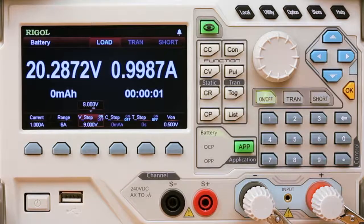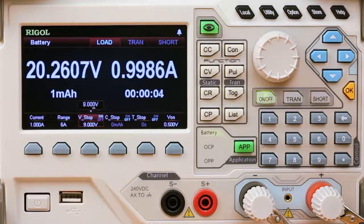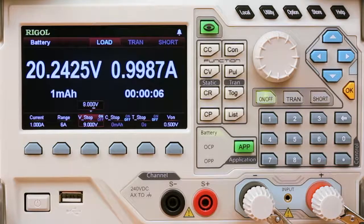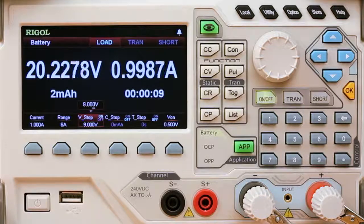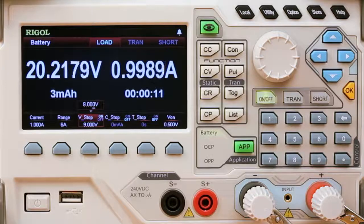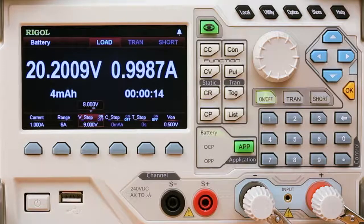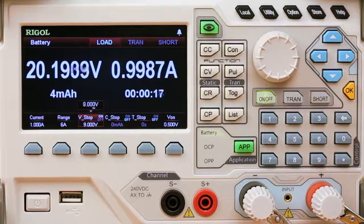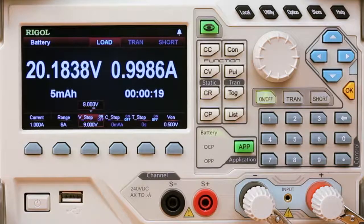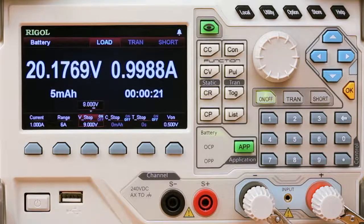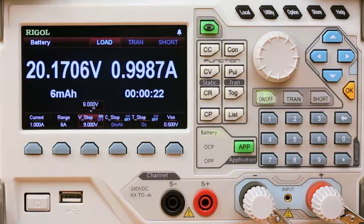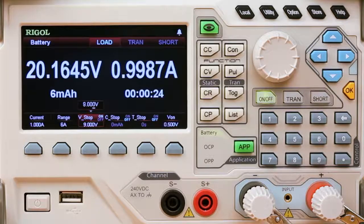So we see the current ramp up to 1 amp and the voltage will start to draw down. In real time we can also measure our capacity. Here we're going at about a milliamp hour every 3 or 4 seconds. And our timing as well is listed on the display. So these are all great values, important values for our battery test that we're going to record and use later when we're comparing results.